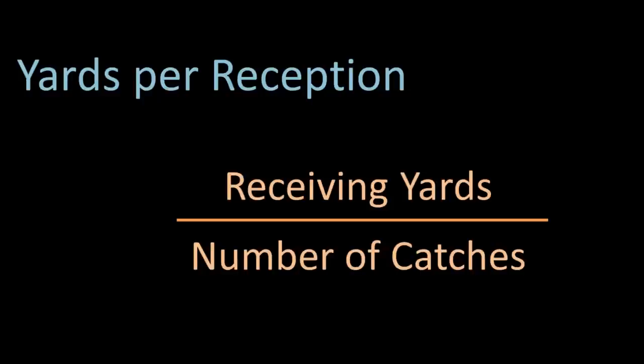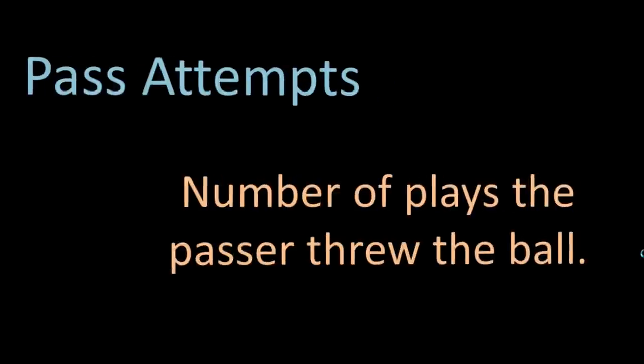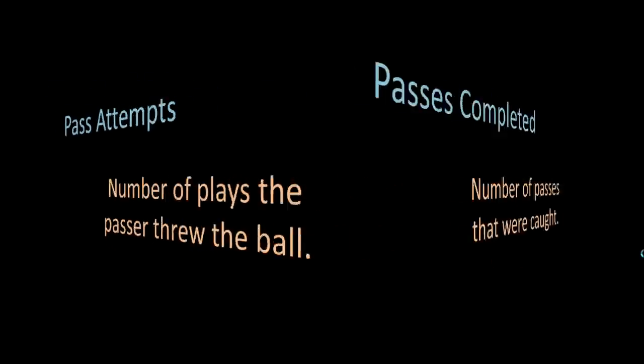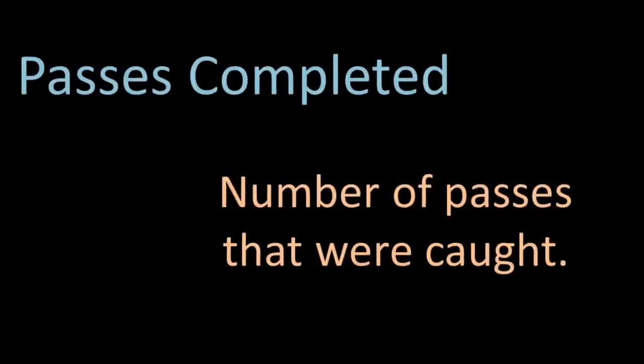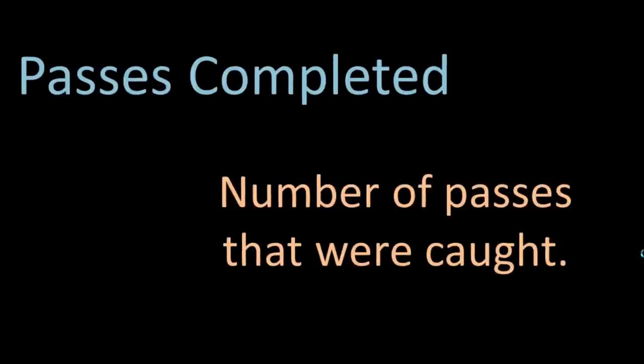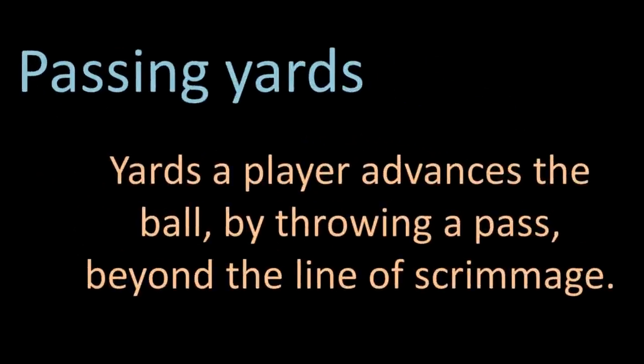The third offensive position we'll look at is the quarterback, who probably has the most stats connected to him. To start simple, we have pass attempts, which is self-descriptive — just the number of times the passer has thrown the ball. Next, we have passes completed, which are the number of pass attempts that have been caught by a receiver. Passing yards are similar to receiving and rushing yards. Again, the yards are not counted until the line of scrimmage, but all yards after the catch are included in passing yards as well.